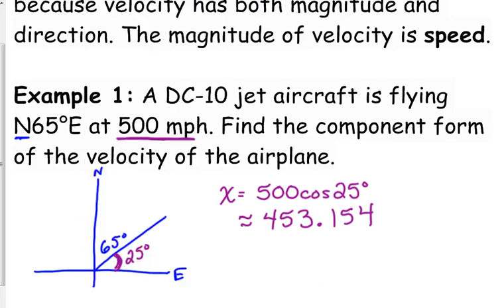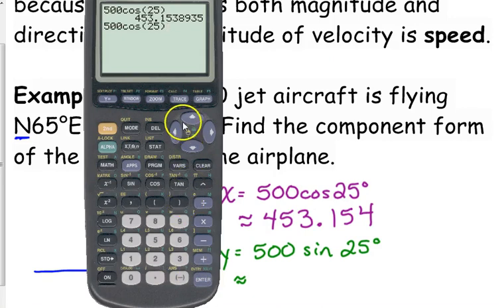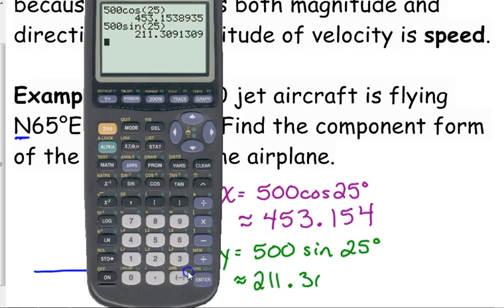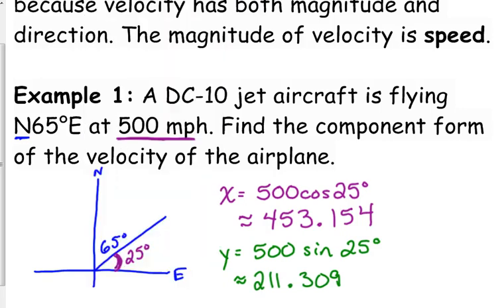The horizontal component of this aircraft's velocity is approximately 453.154. I usually go to about three decimals, just so that I have more accuracy. The y component is, of course, 500 times the sine of 25 degrees. So, in this case, that is approximately 211.309. Which makes sense, if we think about it.